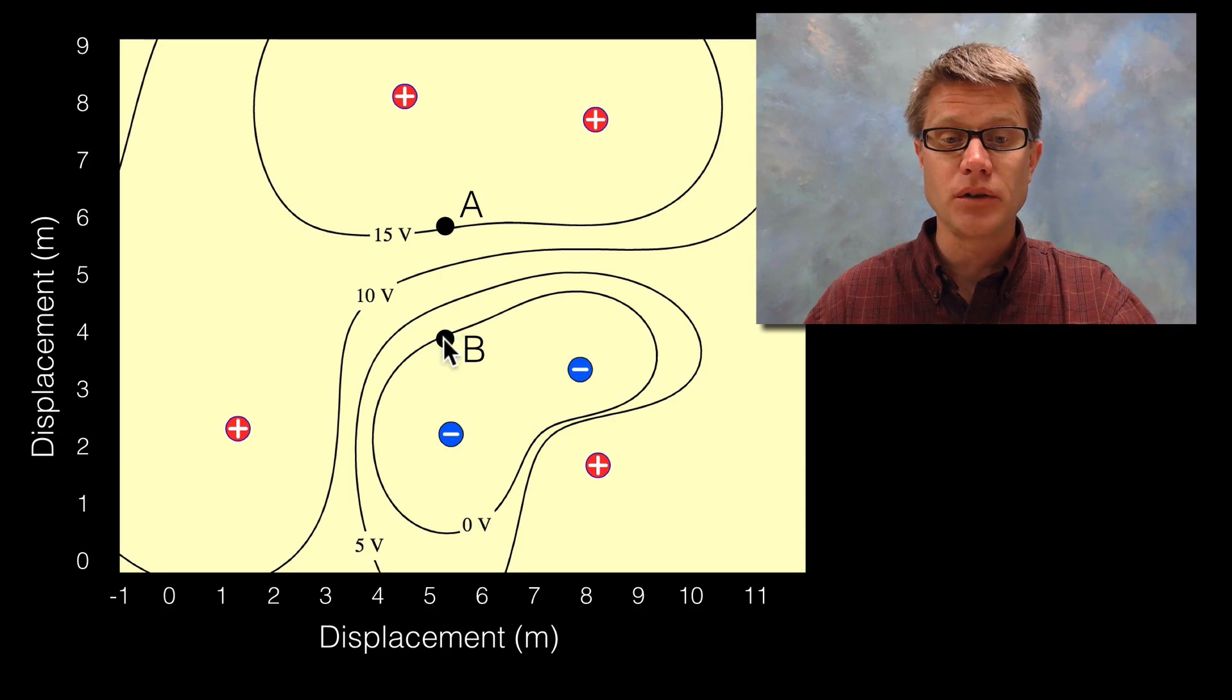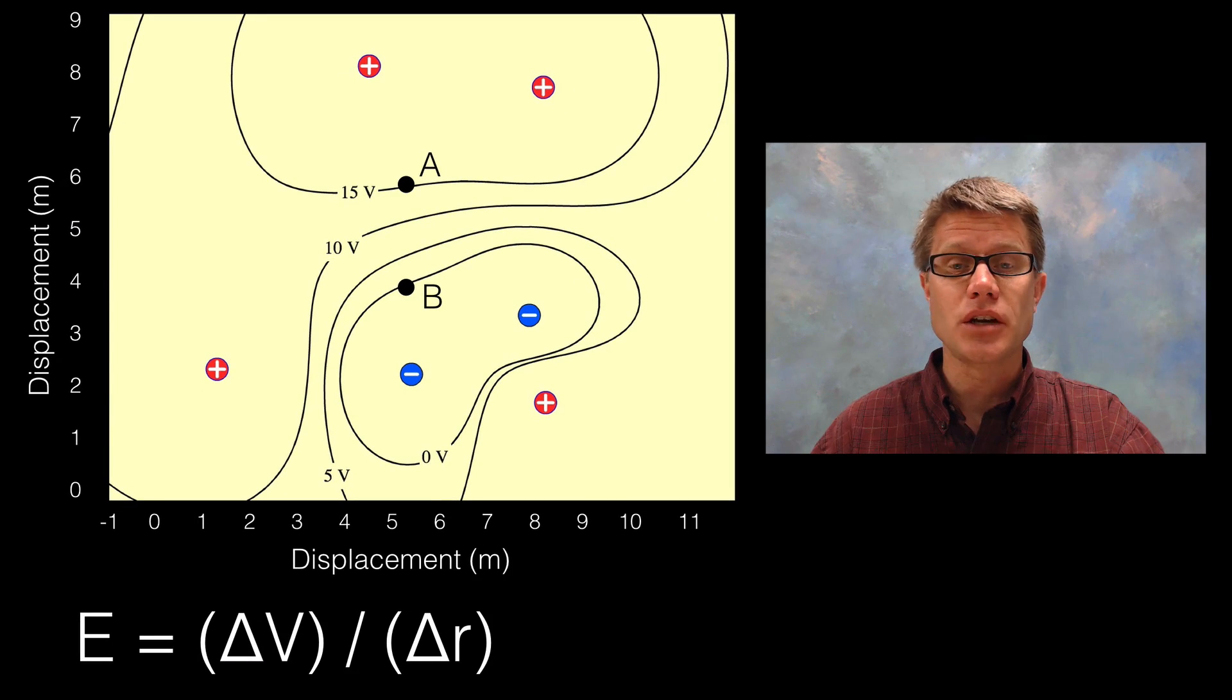Right here it's 15 volts. Right here you can trace it, it's down to 0 volts. So we're going to have a change in potential of 15. Where is my distance? Where is my displacement? Well, you can see here on the y-axis that it is showing my displacement in meters. So I set up my equation again as the change in the voltage or change in the potential over the change in displacement.